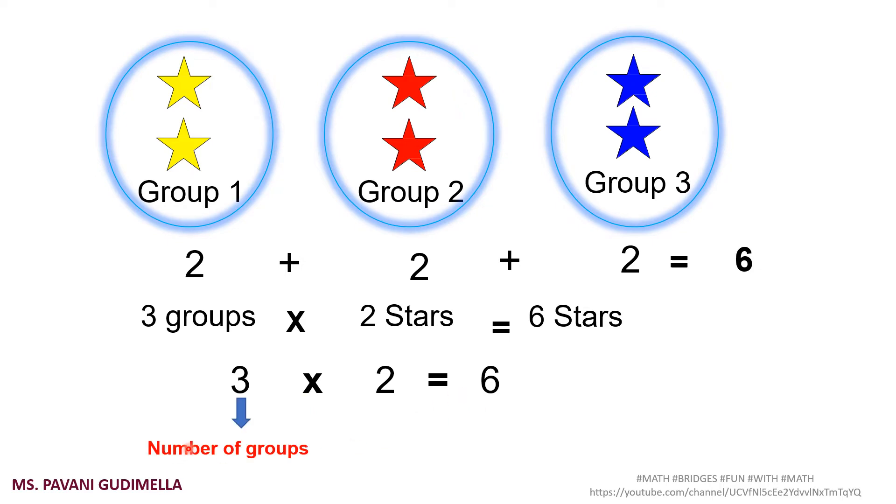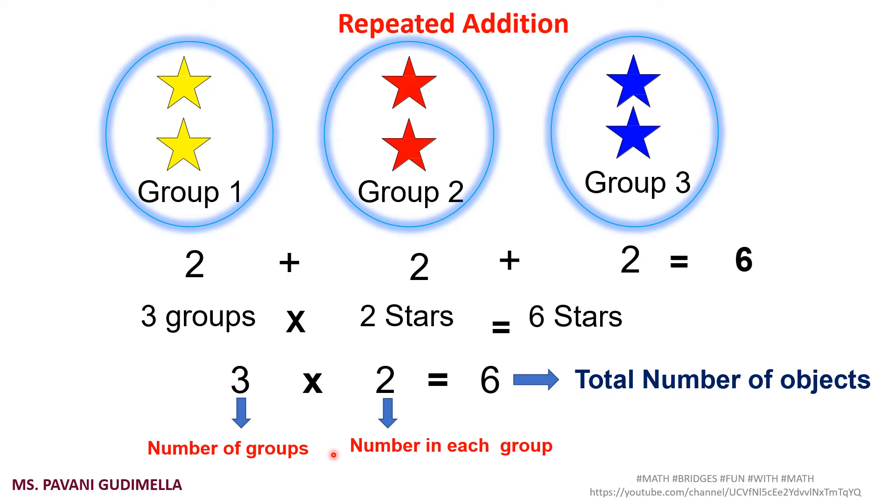What is 3 here? 3 is the number of groups. How many groups? 3 groups are here. And what is 2? 2 is the number of objects which are there in each group, 2 stars. And 6 is the total number of objects. This is known as repeated addition, which is called multiplication.